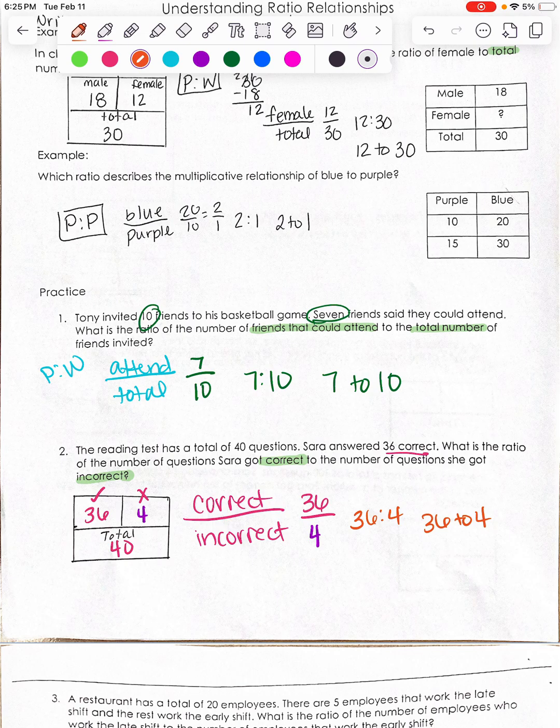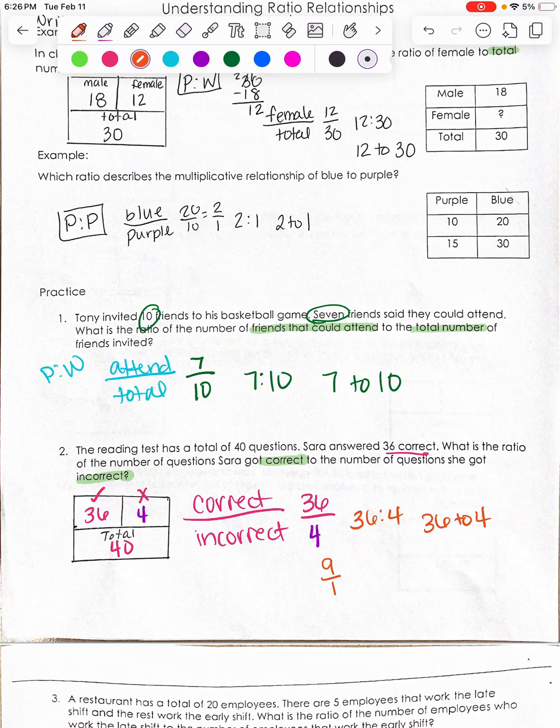You could do 9 to 1 because you could divide them both by 4. But this particular thing did not ask you to simplify. It did not tell you specifically to simplify. But you could.